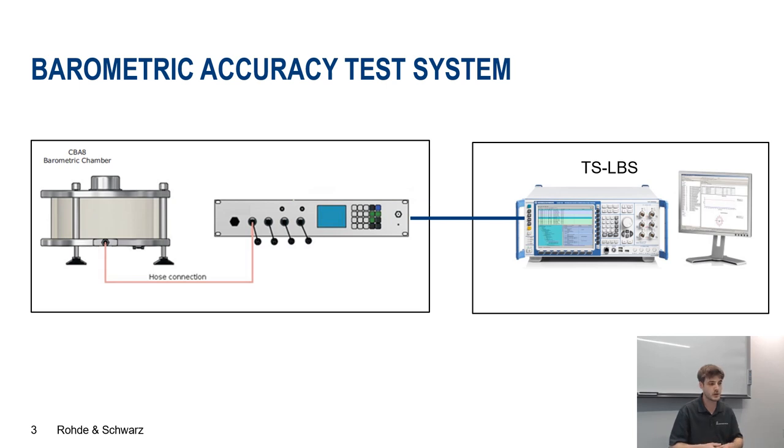What you see here is actually our barometric pressure chamber that you can use in combination with a controller to produce a controlled pressure environment. You can also put that in an environmental chamber to do the measurements at different temperature levels. Of course, you can also combine that with our RF test system to test the barometric pressure sensing along with the GNSS and Wi-Fi positioning.